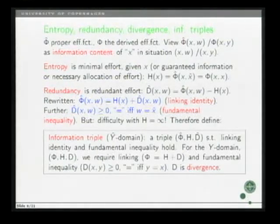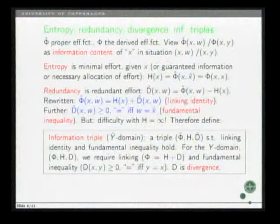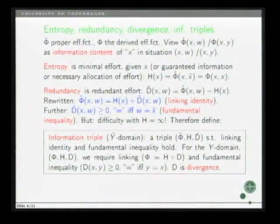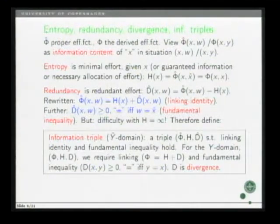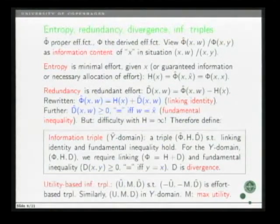This is only absolutely true if entropy is finite. But to avoid that, I suggest to work with information triples. And for that, this is a triple in the Y hat domain, where you have these three important concepts appearing. The effort function, entropy, and redundancy. And the linking identity and the fundamental inequality should hold. If you translate that to the Y domain, you have the similar requirements. But then, the name of D is divergence rather than redundancy. And for utility-based triples, you just make a switch of sign.